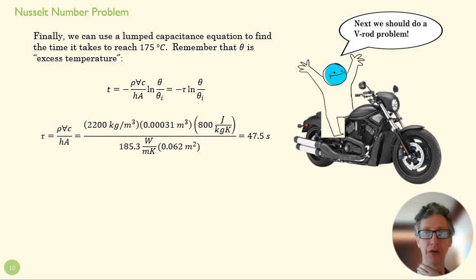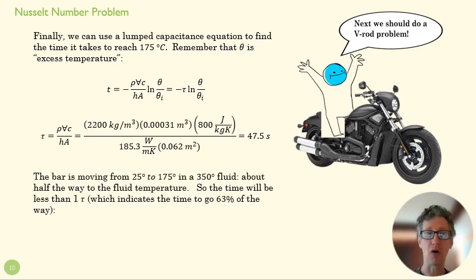It means to cool down all the way, or to heat up, rather, all the way to about the fluid temperature, 350, takes 3 or 4 tau. So that would be 3 or 4 minutes. We're not going that far. We're going about halfway from 25 to 175. So that's not even 63%. So our time is going to be less than 1 tau. So we should expect that our time here is going to lie somewhere at 30 or 40 seconds, so we know if we make a mistake in our math.